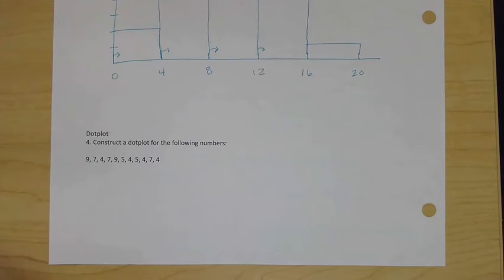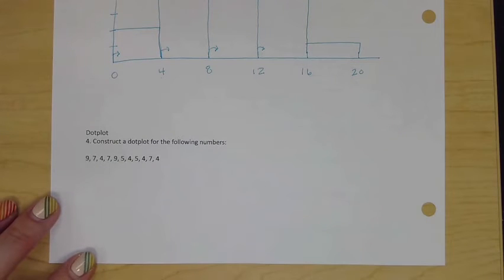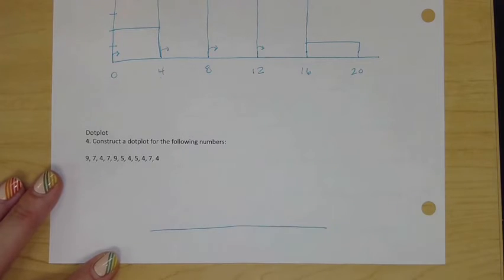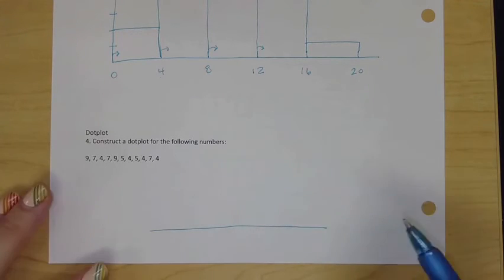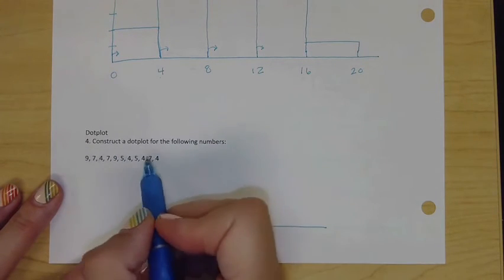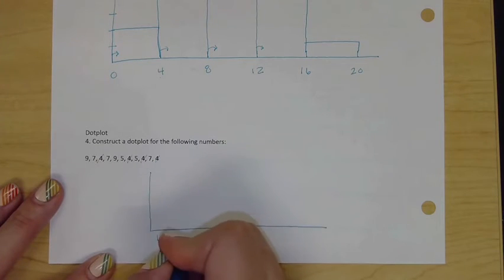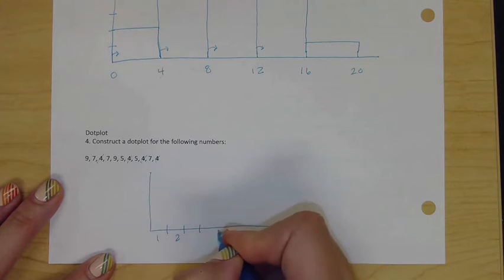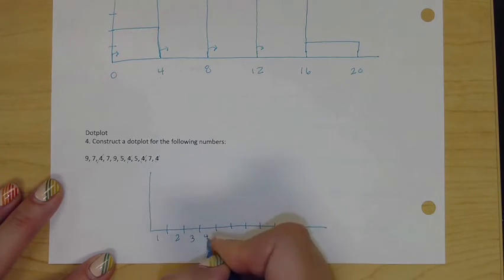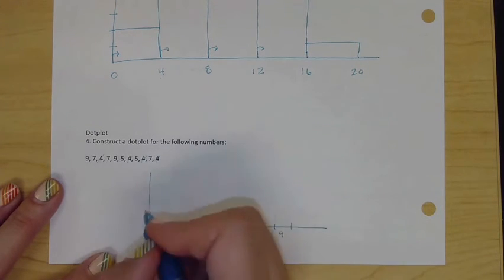The last problem on our page is a dot plot where we just have a series of data that literally has no description. We have no idea what this data is, but we're going to create it. It's very much like a bar graph, but it's a frequency table. We have fours, I think that looks like our smallest number. One, two, three, four. So we're going to have ones, twos, threes, four, five, six, seven, eight, nine.